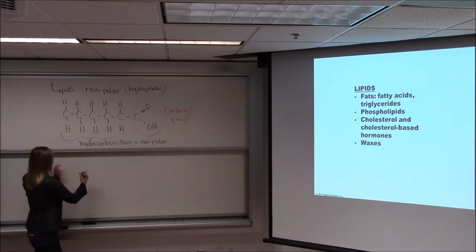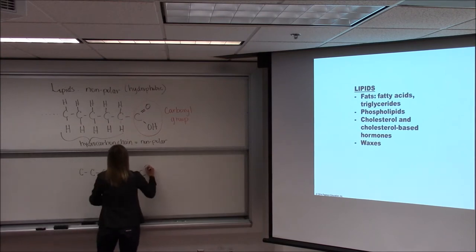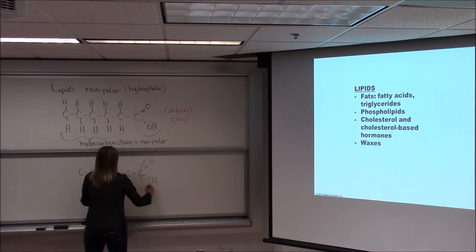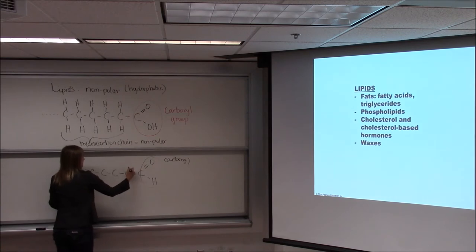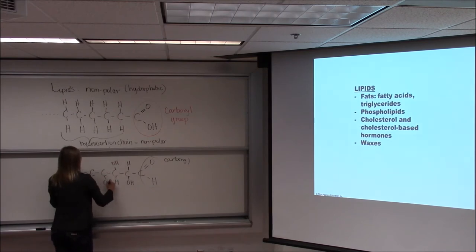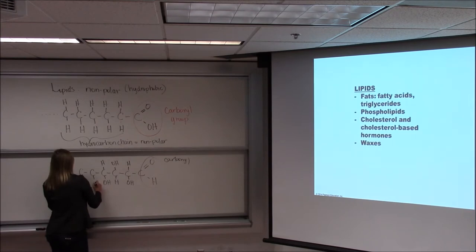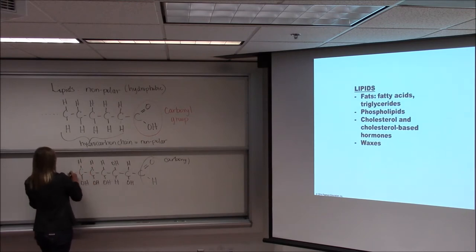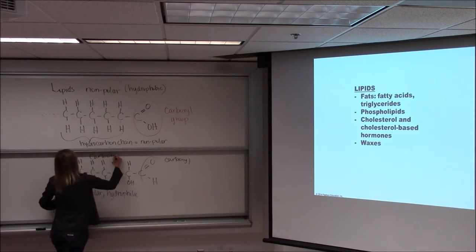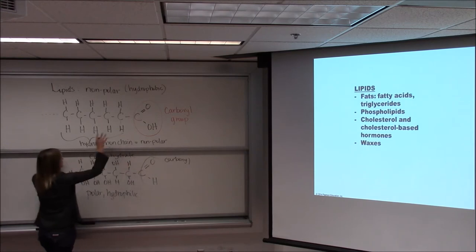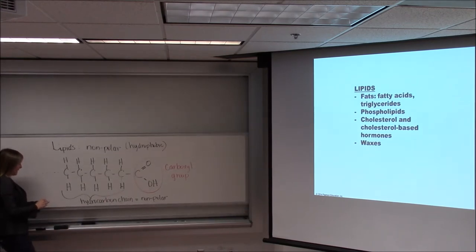To compare: a carbohydrate like glucose has a carbonyl group and multiple hydroxyl groups that mix with water — carbohydrates are polar and hydrophilic. A lipid, by contrast, has a hydrocarbon chain that does not mix with water. So this is glucose; this would be a lipid — a short fatty acid.